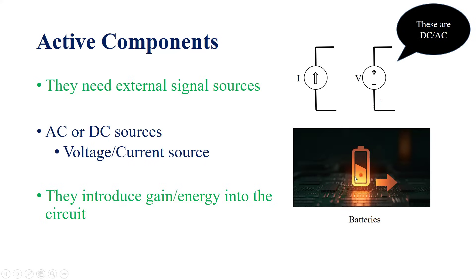For example, a DC signal source would be batteries, which are used in our cell phones or other electronic and electrical gadgets or electrical appliances. You can also have AC voltage sources — for example, a hair dryer. Another definition of active components is that these components or devices are called active because they introduce gain or energy into the circuit — they inject energy into the circuit.